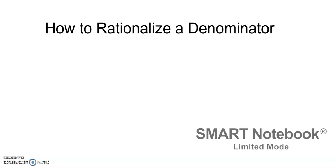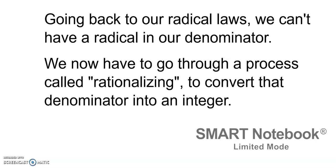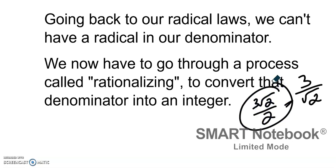Welcome back. Today we are going to be talking about how to rationalize a denominator when there is a radical in the denominator. Going back to our radical laws, we can't have a radical in our denominator. We have to go through a process called rationalizing to convert that denominator into an integer. For example, 3 over root 2 is not fully simplified — we would rationalize it to get 3 root 2 over 2. We'll talk about how to do that in many different cases.